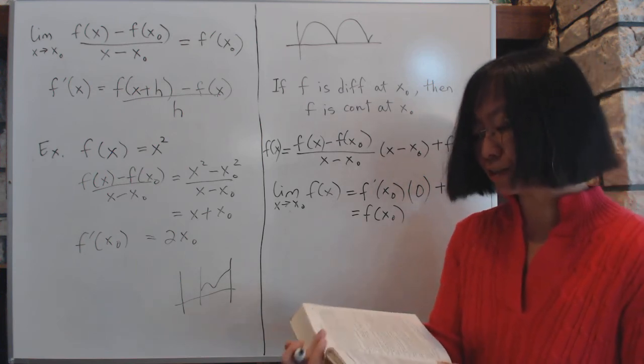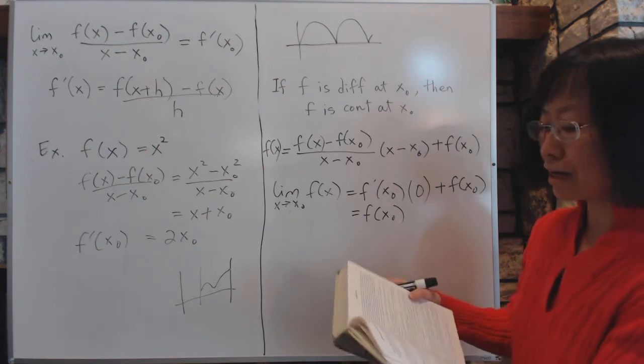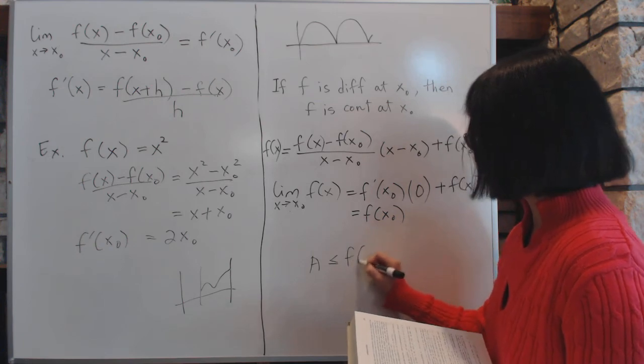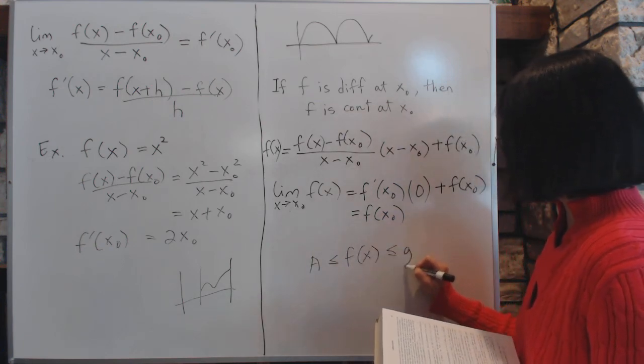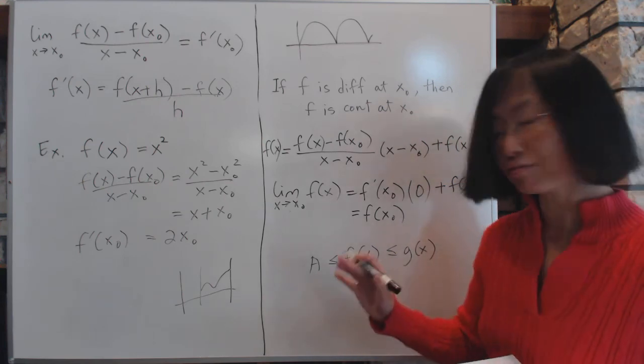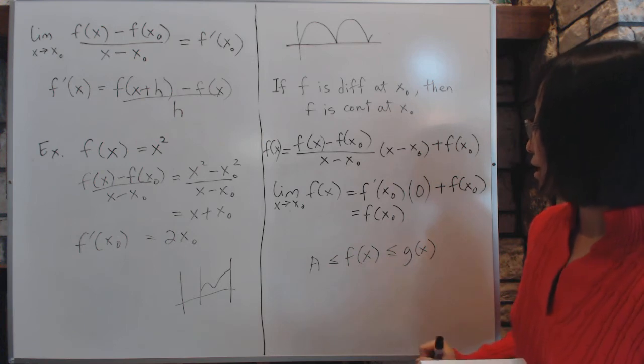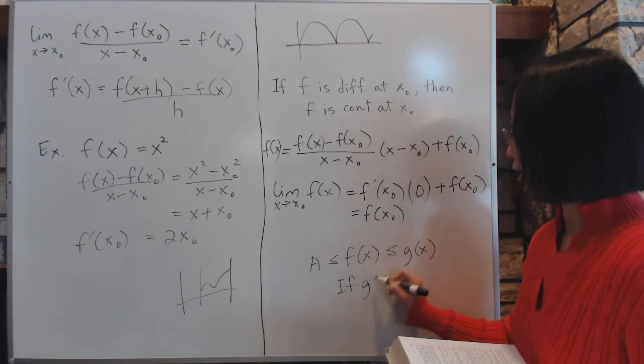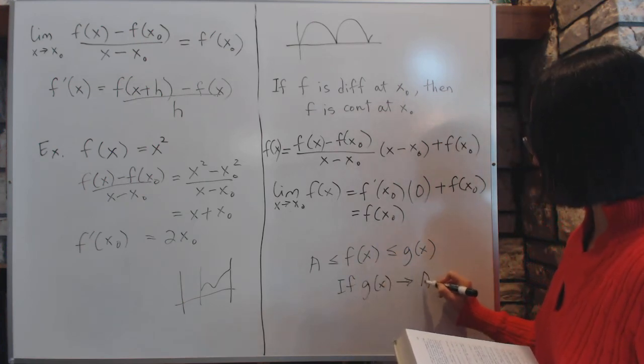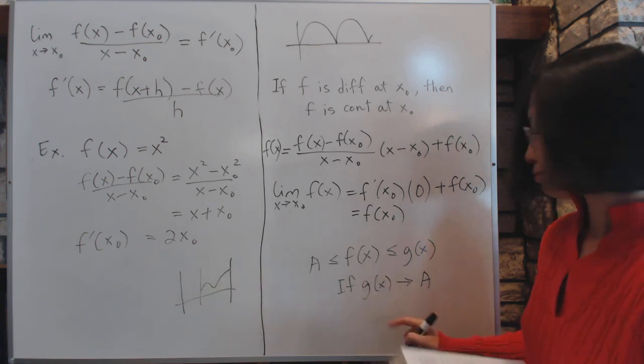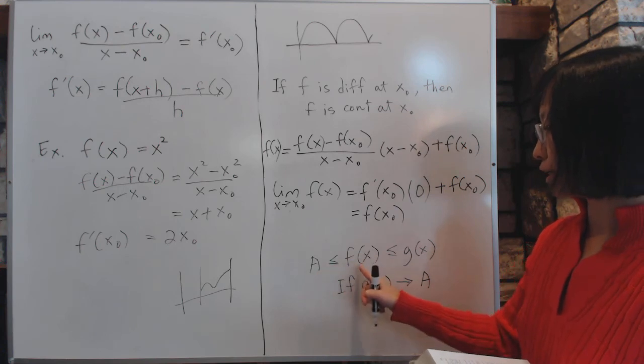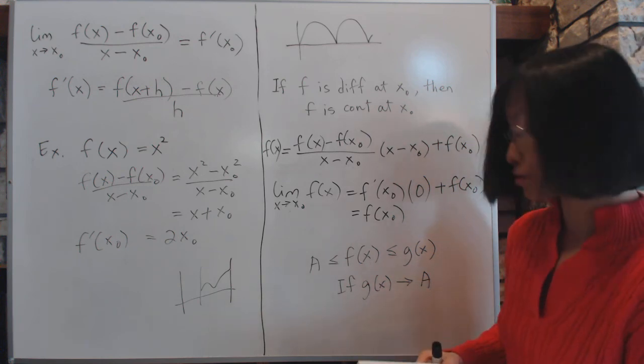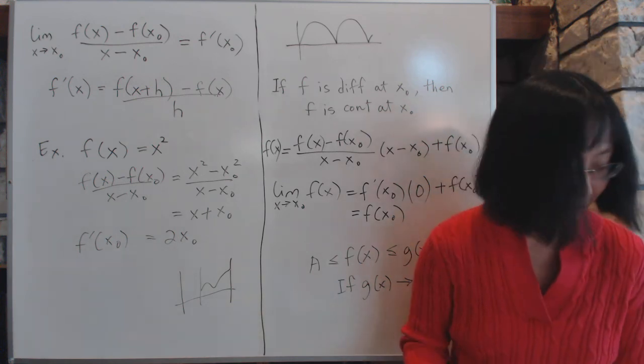And one last thing I want to mention is the squeeze principle. That is, if you have two functions, say you have a value such that f and there's g, and this relationship exists for a set area. And if g of x approaches a, then if g goes to a somehow, then f has to also go to a. That's an intuitively obvious argument. It's called the squeeze principle. And we'll use that sometimes to argue the values of the limits.